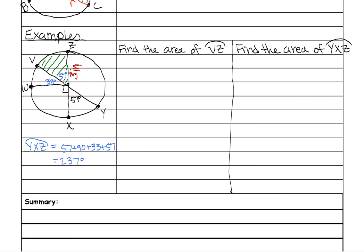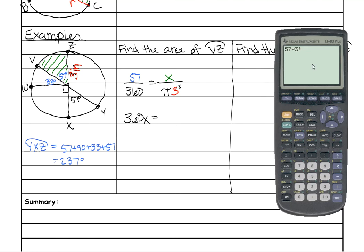Now let's set up our problem. We still do part over whole — so the degree we're looking at. I filled this in with green because that's the first sector area we're finding. It will be 57 over the entire circle, which is 360, equal to the sector area we're trying to find, over pi times r squared. So pi times 3 squared. Then you cross-multiply and solve: 57 times 3 squared gives 513 pi.